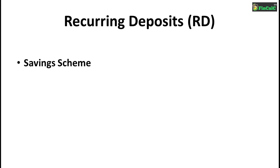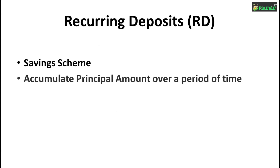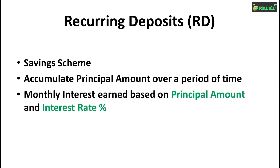Recurring deposit is a savings scheme that allows you to accumulate some pre-defined amount periodically and receive the sum along with the interest earned at the end of the tenure. This means that you save some principal amount every month and you receive the total of this principal amount and the interest earned at the end of the year if the recurring deposit tenure is one year.